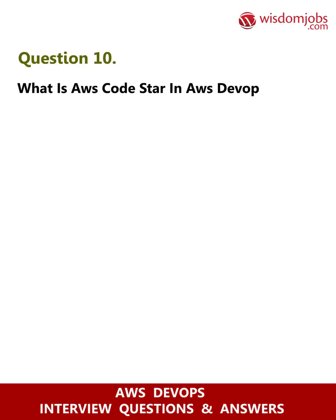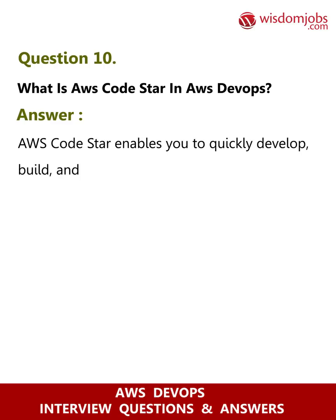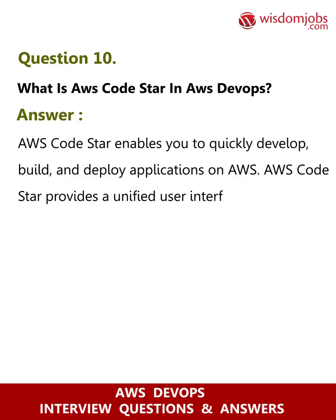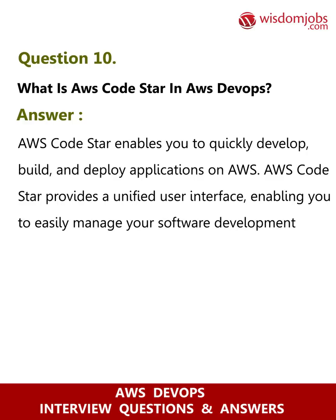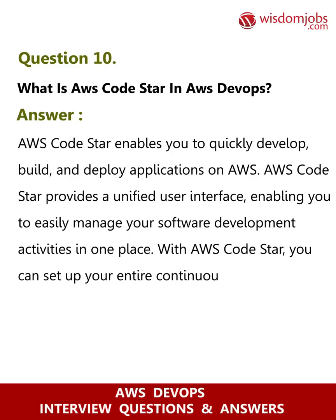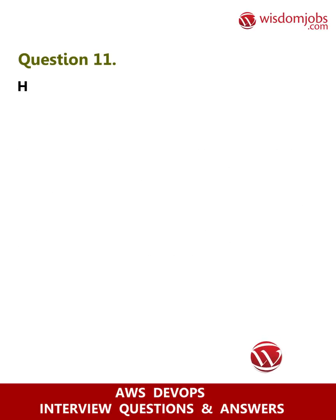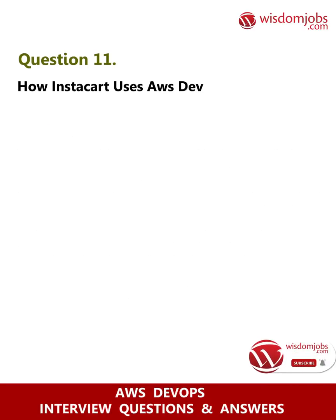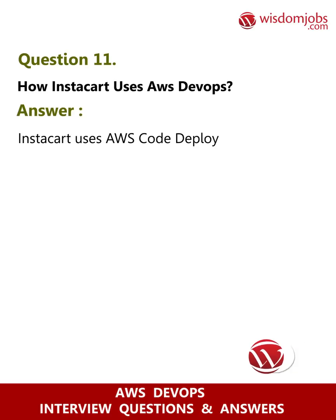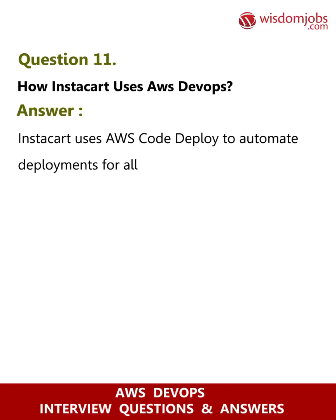Question 10: What is AWS CodeStar in AWS DevOps? Answer: AWS CodeStar enables you to quickly develop, build, and deploy applications on AWS. It provides a unified user interface, enabling you to easily manage your software development activities in one place. With AWS CodeStar, you can set up your entire continuous delivery tool chain in minutes, allowing you to start releasing code faster.